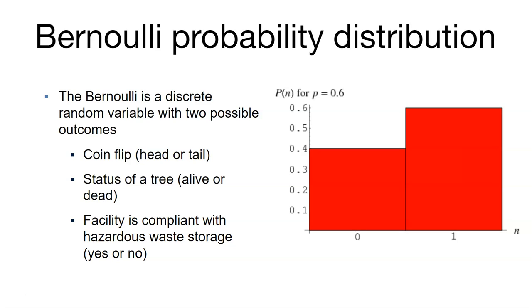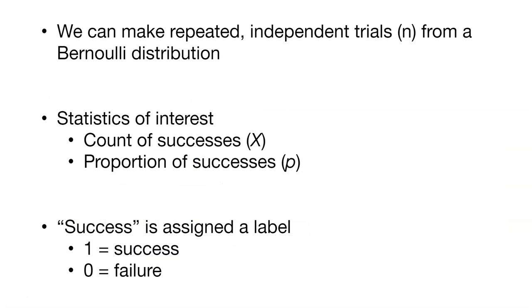We'll talk a lot about binary outcomes and how they relate to the Bernoulli distribution. We can make repeated independent trials from a Bernoulli distribution. We can flip a coin several times or go to different trees and continue to mark whether or not they're alive or dead. That's an example of a series of independent trials that are repeated.